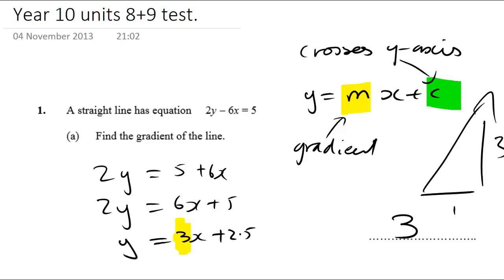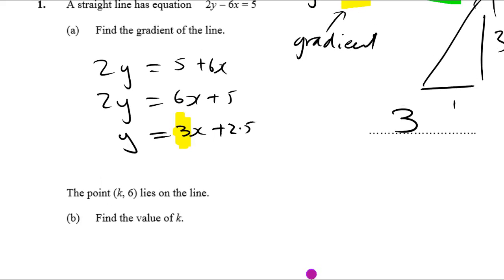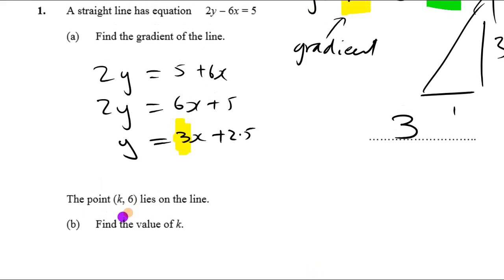Let's move on to the next part of the question. We're told that the point (k, 6) lies on this line. Let's find the value of k. So k is the x value and 6 is the y value. Let's put those in. Actually, I think it's easier to put them in the starting equation.